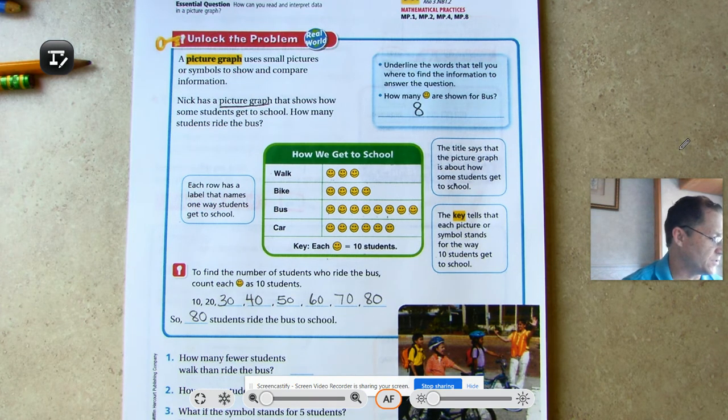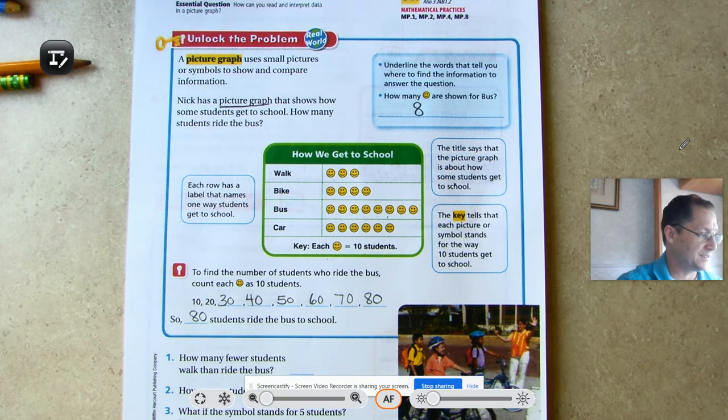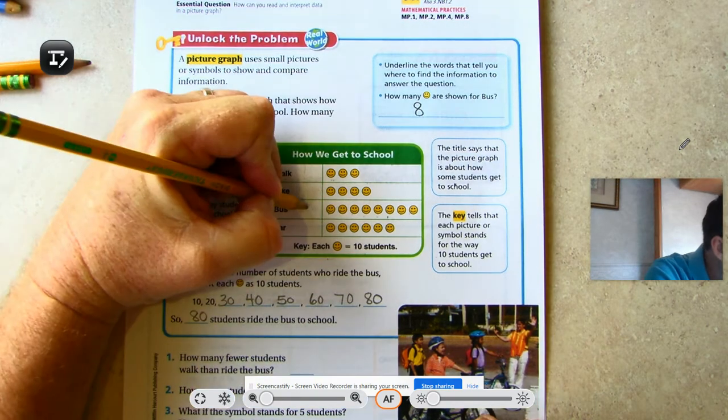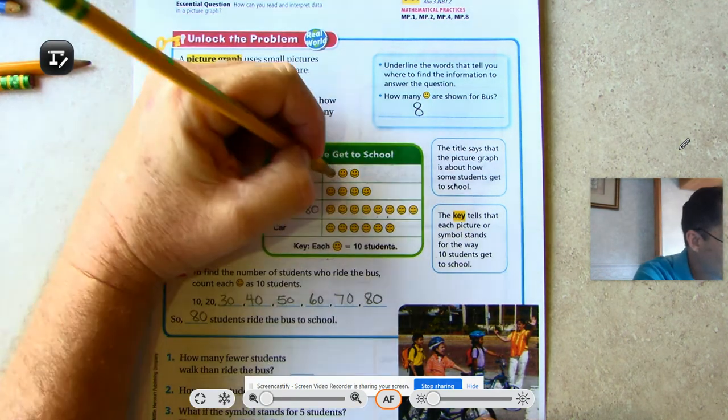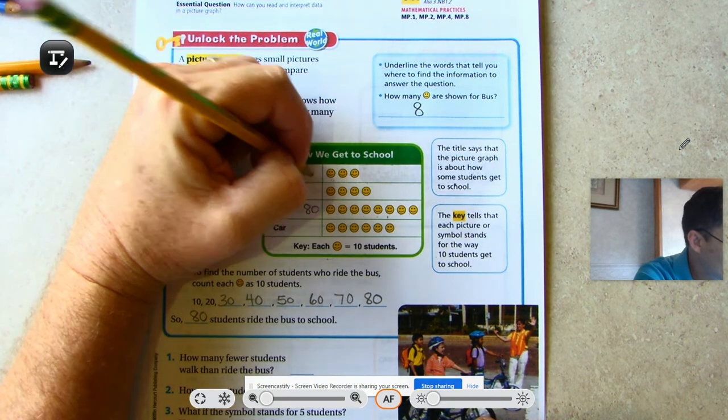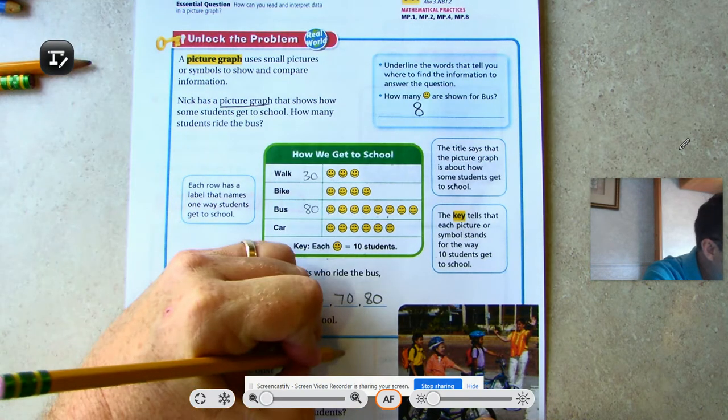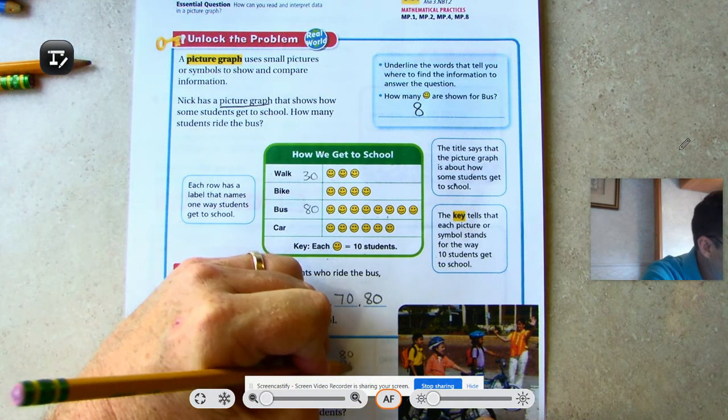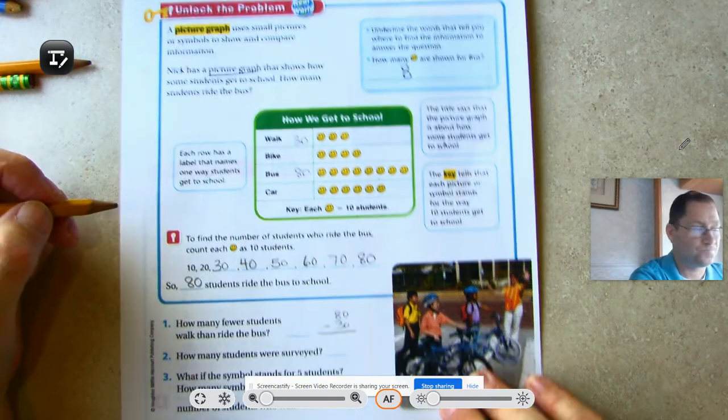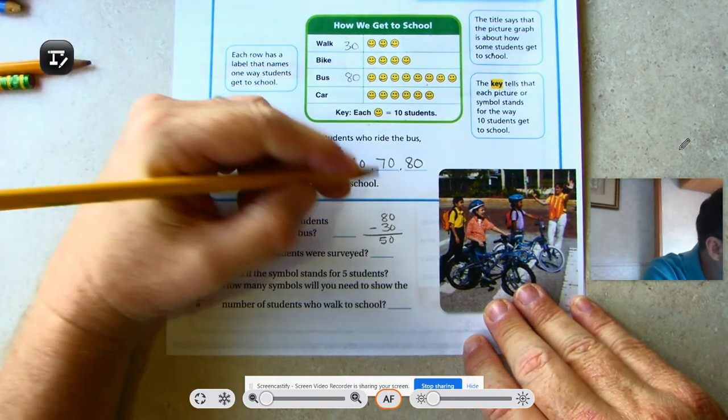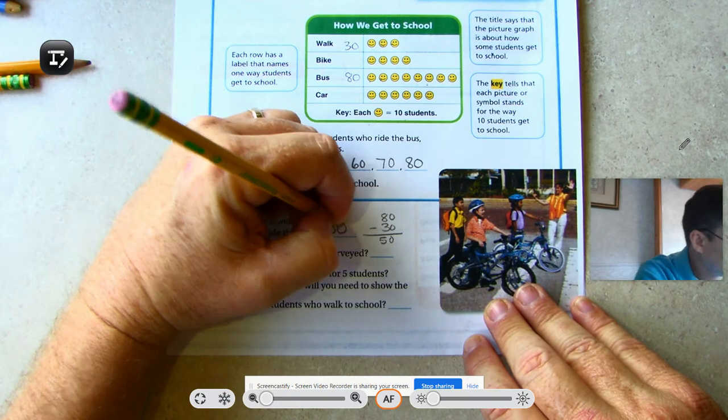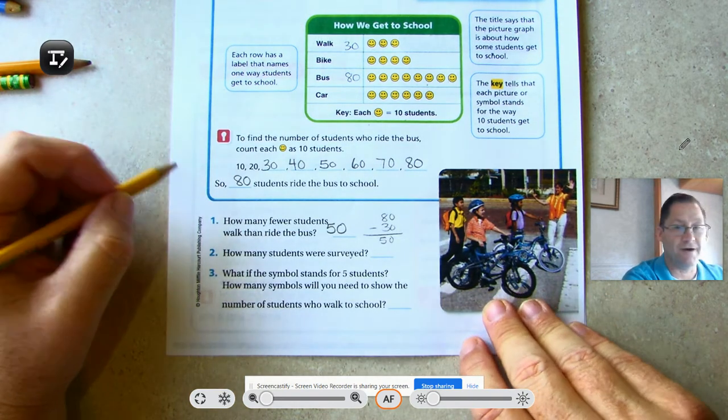How many fewer students walk than ride the bus? Well, we knew that 80 students ride the bus. Walk: 10, 20, 30. So 80 take away 30. So 50 fewer students walk than ride the bus.